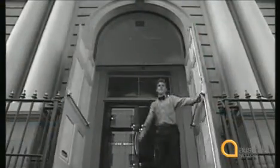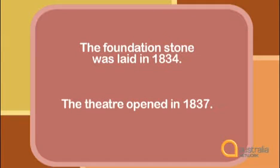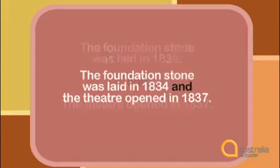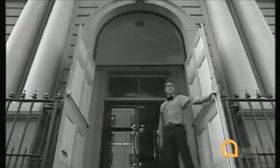But it's best to use a variety of sentence types and not just a list of simple sentences. Listen to this: The foundation stone was laid in 1834 and the theatre opened in 1837. You can join two simple sentences together with AND. The two sentences are: The foundation stone was laid in 1834. The theatre opened in 1837. Joining them with AND gives you a compound sentence.